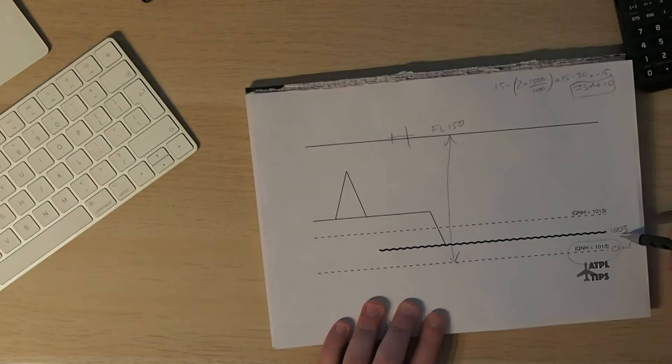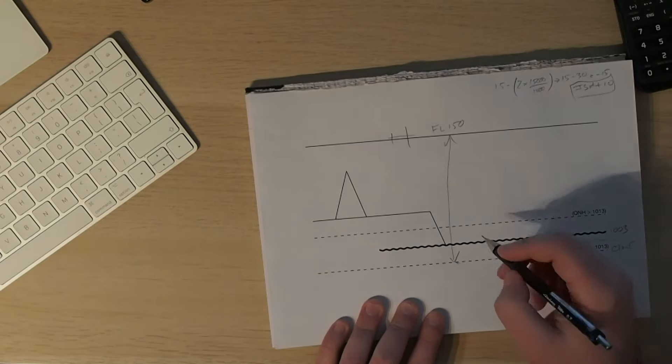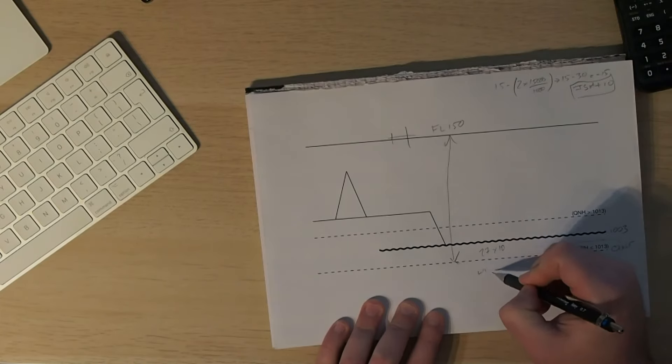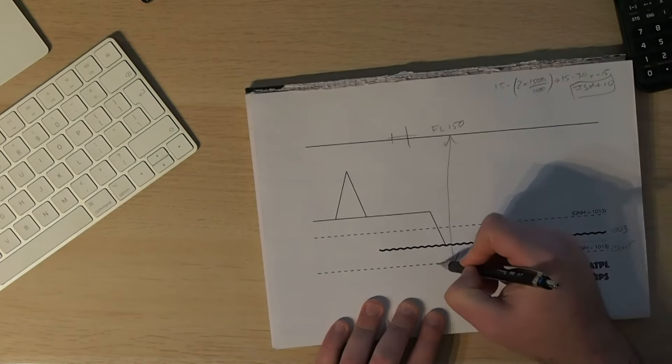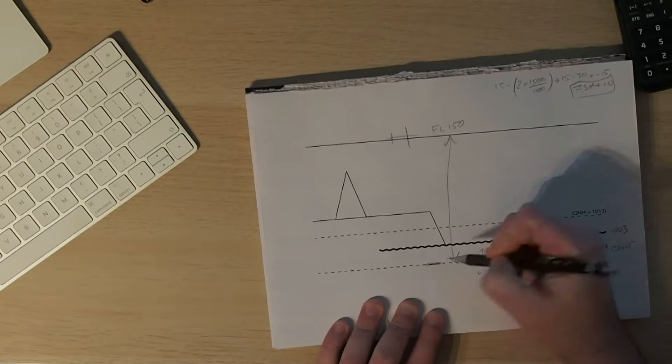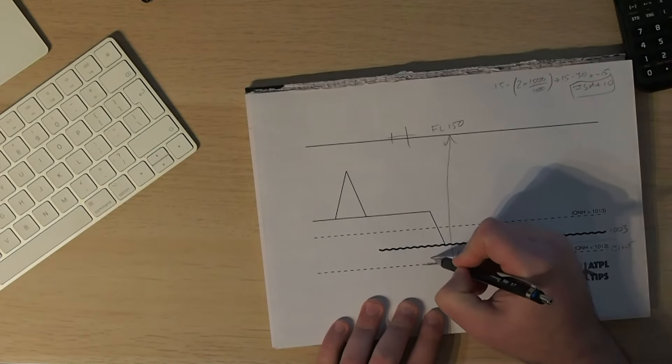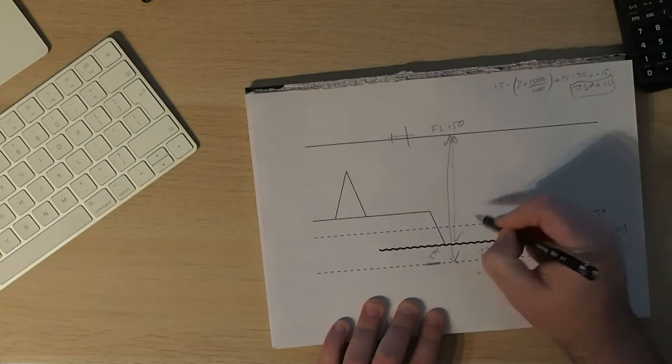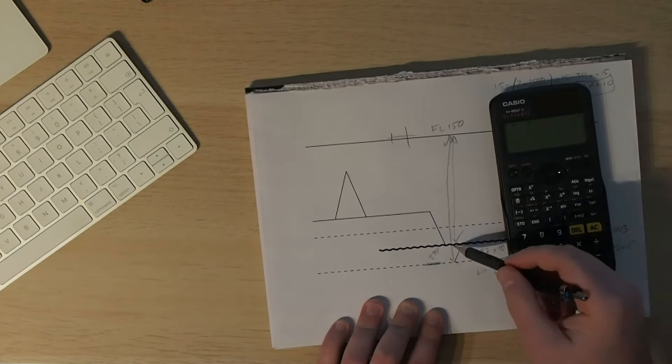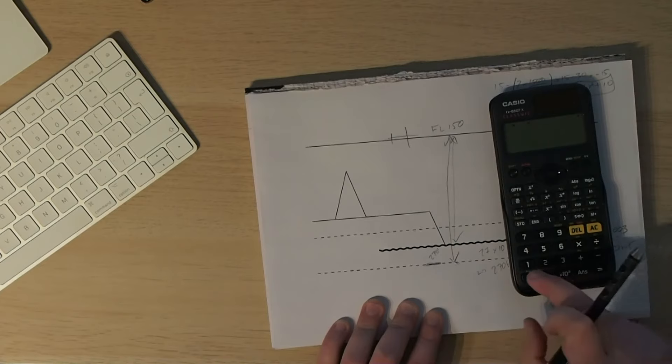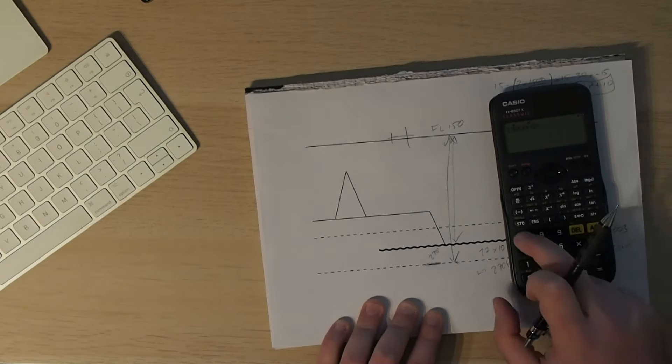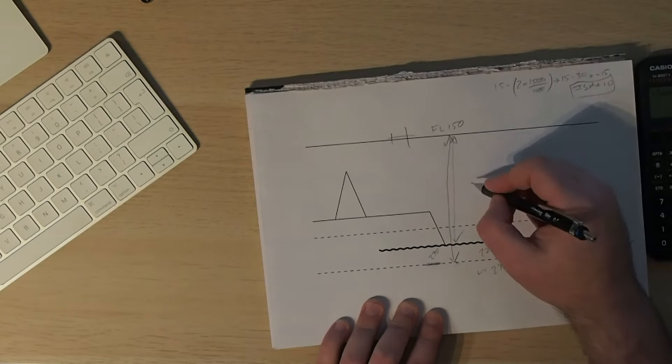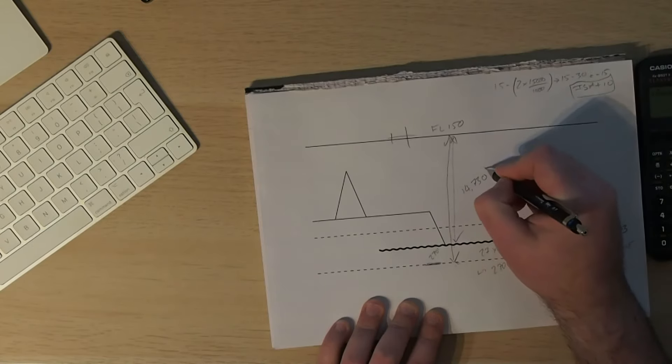Well, indicated altitude is going to therefore be the difference between 1013 and 1003, which is 10 times 27 feet per hectopascal, and that's going to work out at 270 feet. So the difference in level between our set 1013 datum and our sea level is 270 feet. That means that the height above sea level is going to be 15,000 minus 270, and that gives us 14,730 as an indicated altitude.